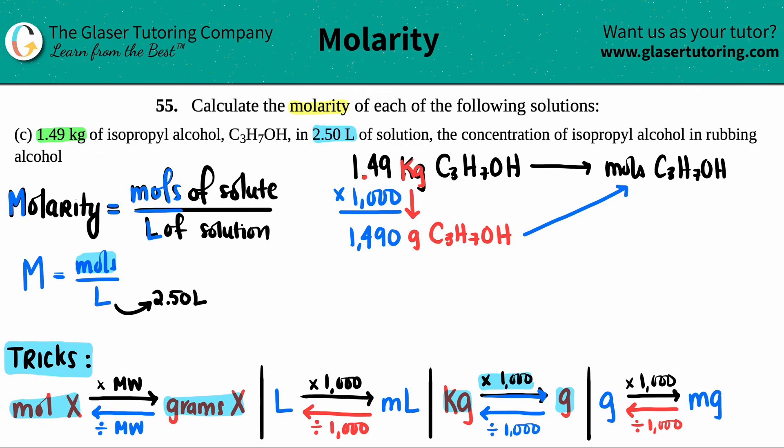So they're equivalent. I either have 1.49 kilograms or I have 1,490 grams of this isopropyl alcohol. One step done. Now we just have to find out, well I have this amount of grams, how many moles do I have?